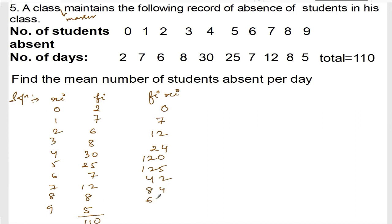If I add all of these numbers: 0 plus 7 plus 12 plus 24 plus 120 plus 125 plus 42 plus 84 plus 64 plus 45. Let me calculate: 9 plus 4 is 13, 14, 15, plus 5 is 20, 24, 25, 26, plus 7 is 33.